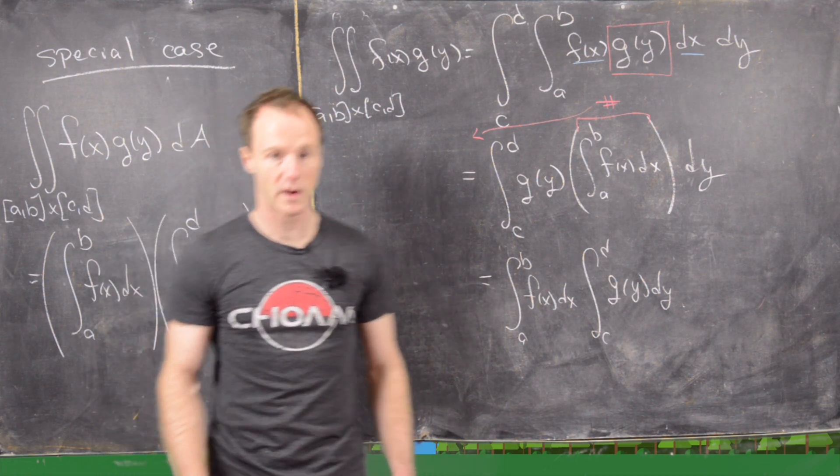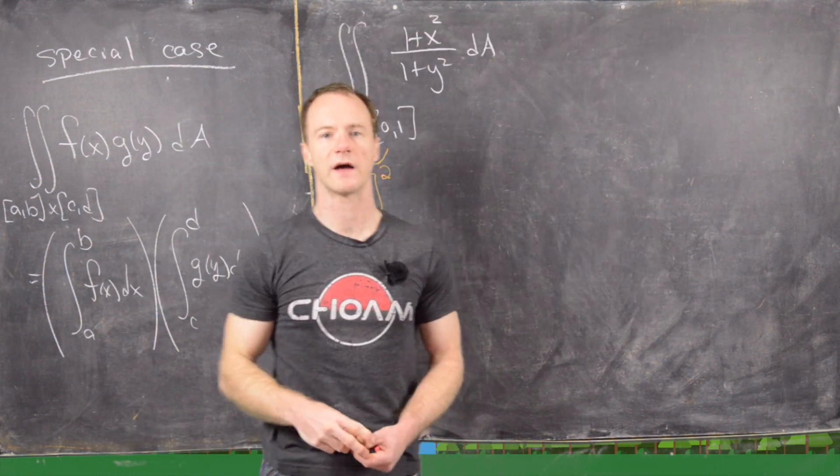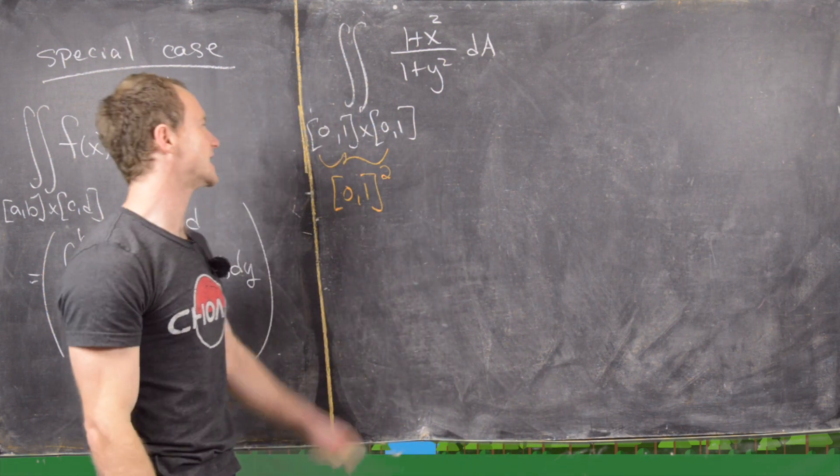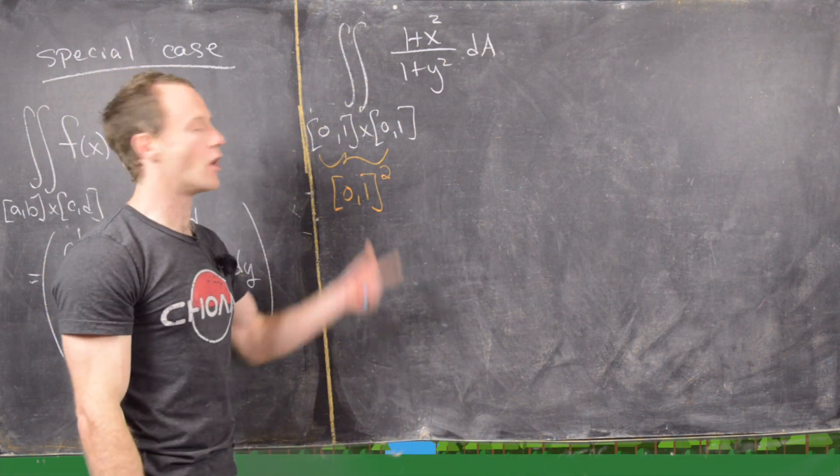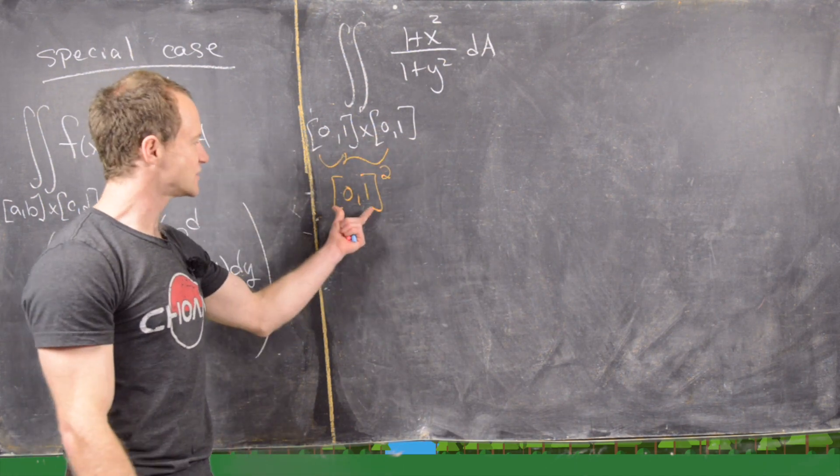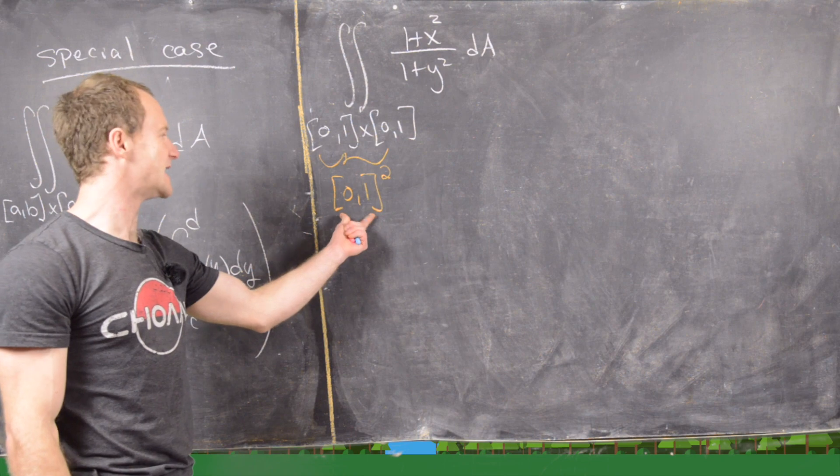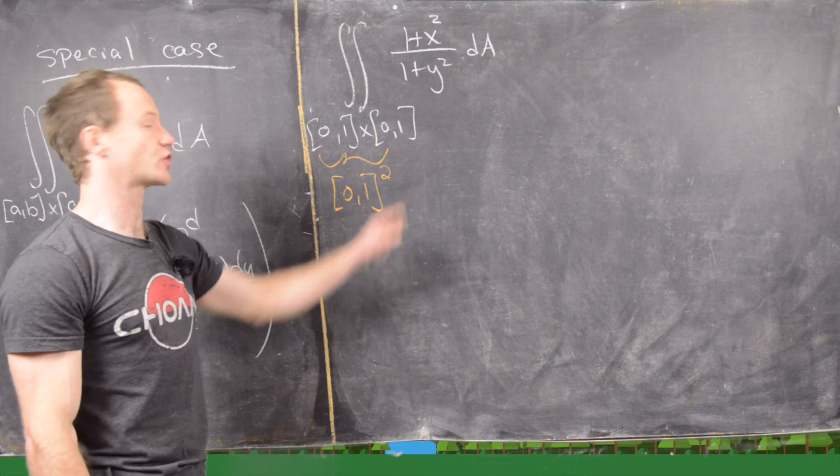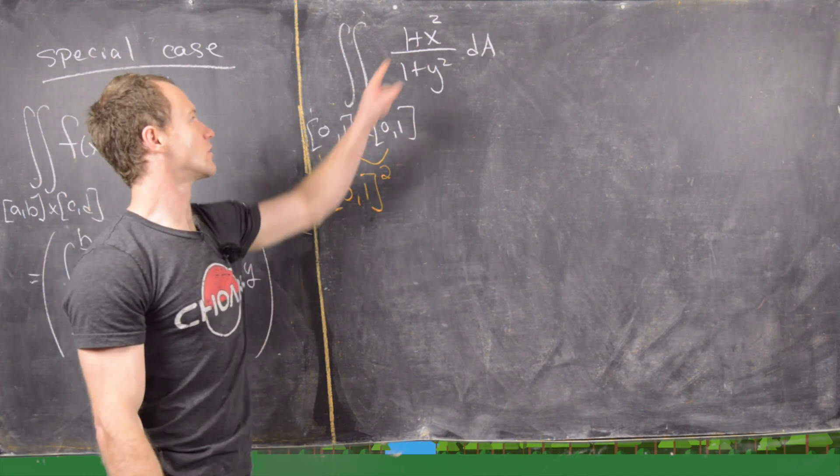All right, I'll clean up the board and we'll look at a quick example of this. Okay, so as an example of the special case, we'll look at the double integral over the unit square, so this is [0,1] × [0,1].